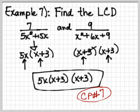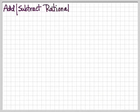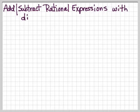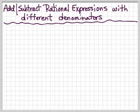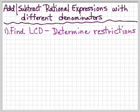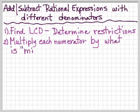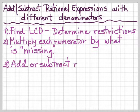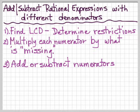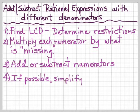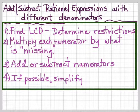Go ahead and do your checkpoint number 7. Next, we want to add and subtract rational expressions with different denominators. We're going to find the LCD, determine the restrictions, multiply each numerator by what is missing, and then add or subtract the numerators. I'll explain what 'missing' means once we do the next example. And if possible, simplify.